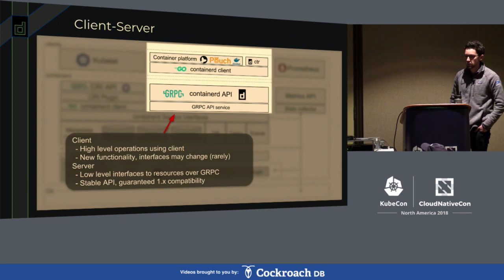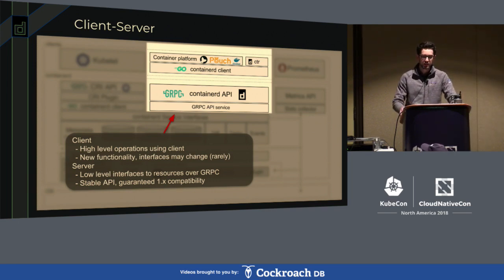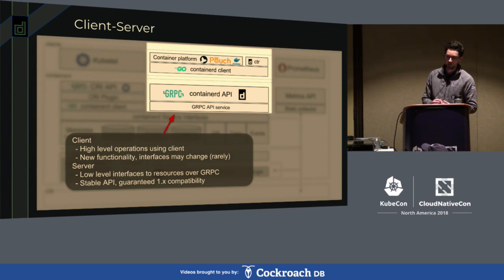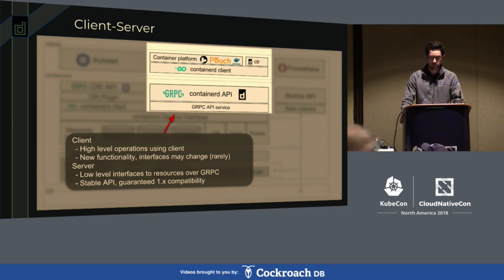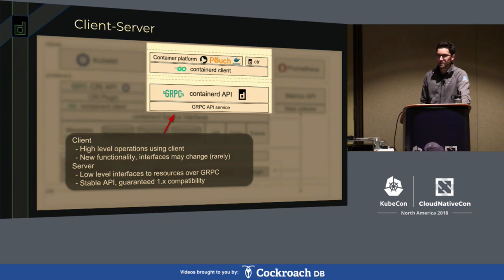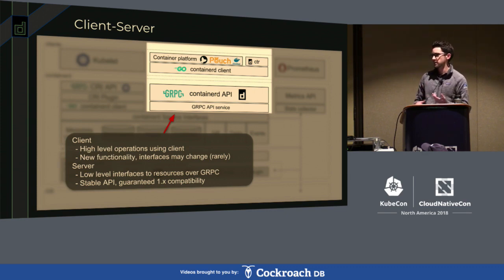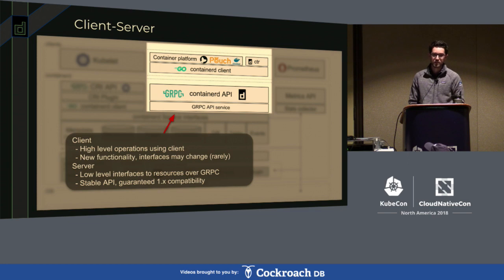ContainerD has a smart client model. The actual Go ContainerD client implements many of the higher-level functionality. Push and pull, for example, are done inside the ContainerD client. We provide a very usable interface for integrating with our client library - this is what you'll see Moby, Pouch Containers, our own tools like CTR, and the boss tool integrating with. The ContainerD client communicates with our ContainerD API, which is very low level and mirrors roughly the services underneath it, such as the snapshot or content service.